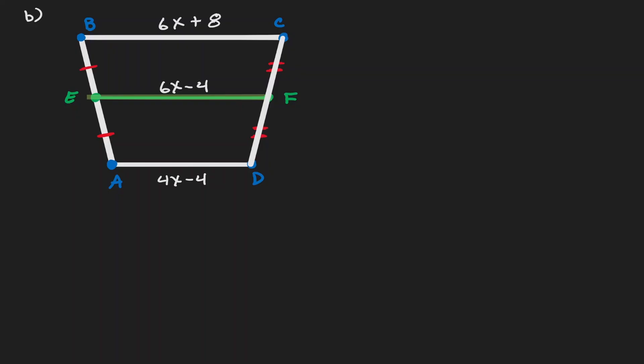So we can use the same property as before, where EF is one half of the addition of the bases. And I guess I forgot to notate it here, but BC is a base, it is parallel to AD. And now that we have an equation, let's plug in what we know.